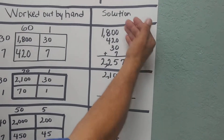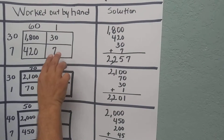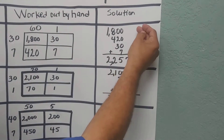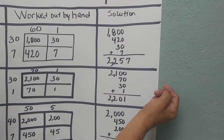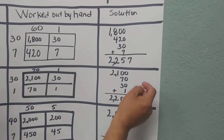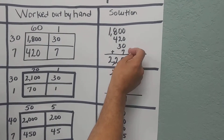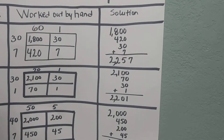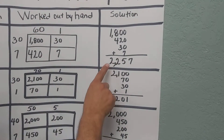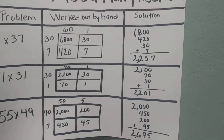Working out our solution, we add all those numbers within the box, starting with 1,800, 420, 30, and 7. Adding them up, we get 2,257.